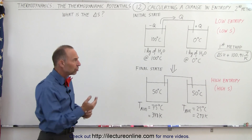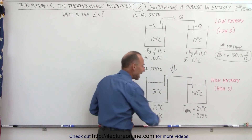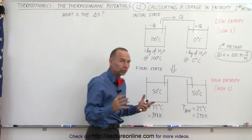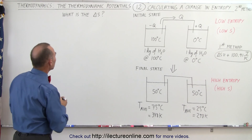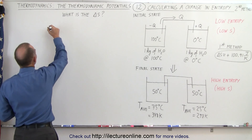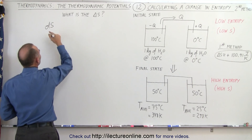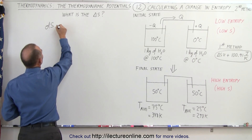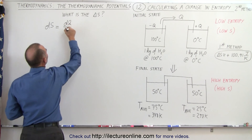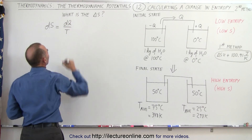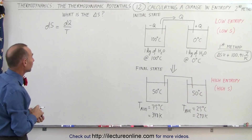Now we're going to calculate the change in entropy, but not by using the average temperature — we're actually going to use integration to calculate the change in entropy. In this case we have to say that ds, the change in entropy, a small change in entropy, is defined as dq divided by the temperature at which it happens. Now temperature will not be a constant; it will be a variable.